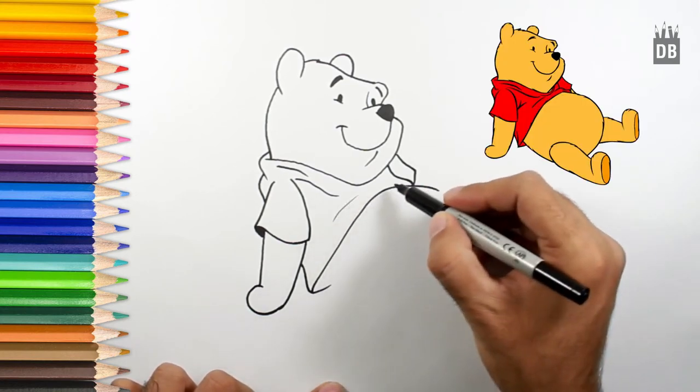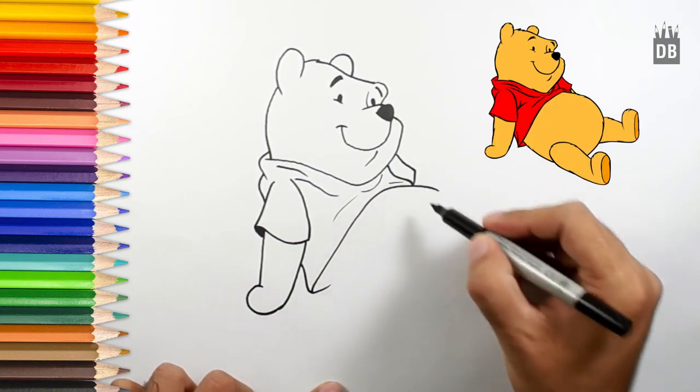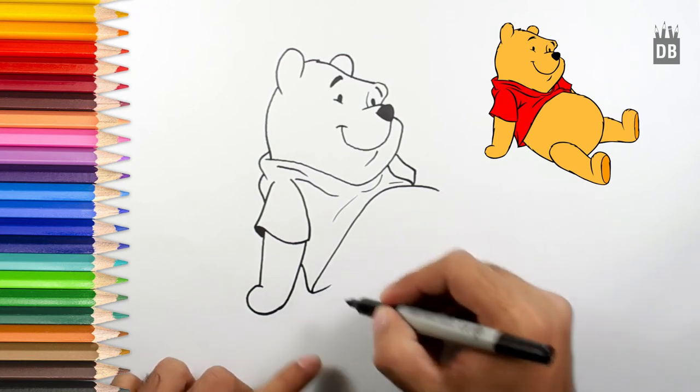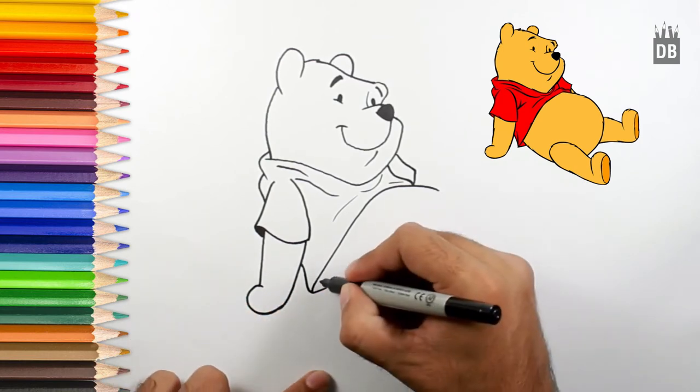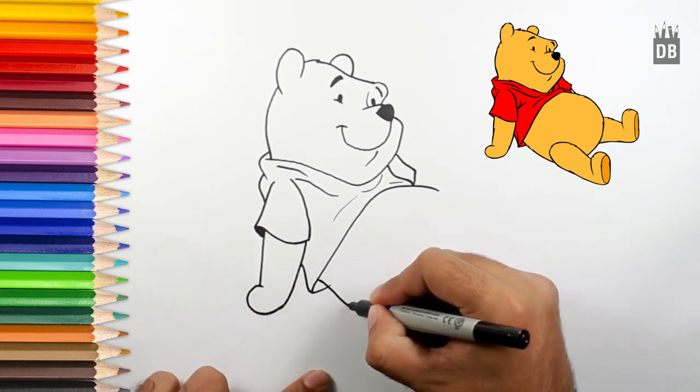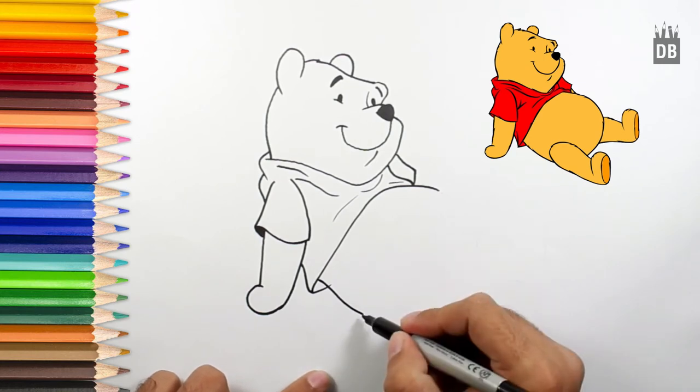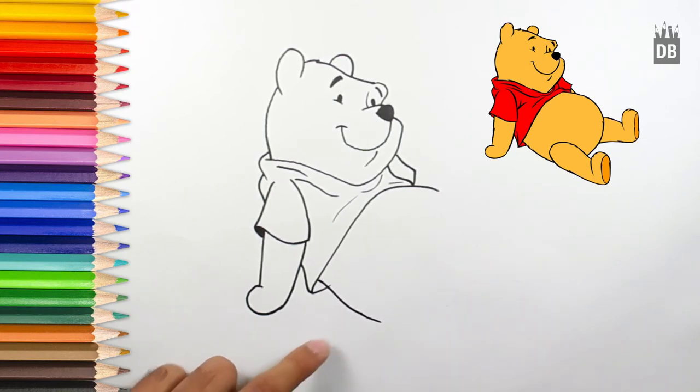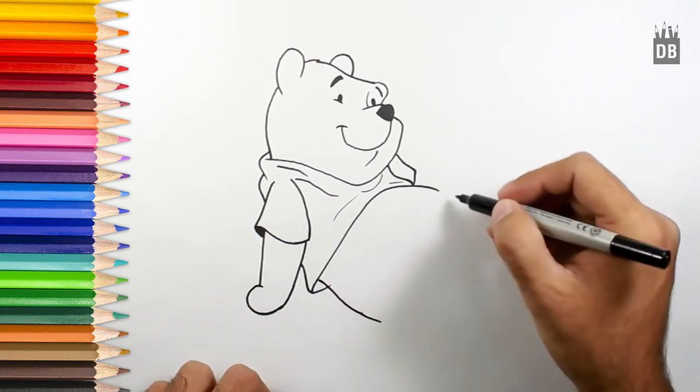And you can draw some random lines here. And from here, we will make his belly, and this will be a big circle.